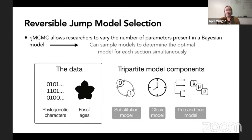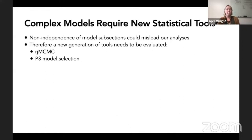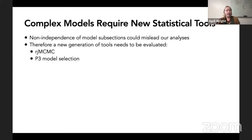The other technique my lab has been piloting is posterior predictive model adequacy testing. These are a family of methods that allow us to simulate data from our Bayesian posterior distribution and then see if when we simulate those data, they look like the empirical data. If they do, we have some test statistics to describe the goodness of fit, and the model is considered adequate for the data. With these new hierarchical statistical models, we have non-independence of model subsections that could be misleading for our analyses, so we're evaluating a new generation of tools for dealing with these sorts of problems. Thank you to all my lab members, collaborators, and funders.